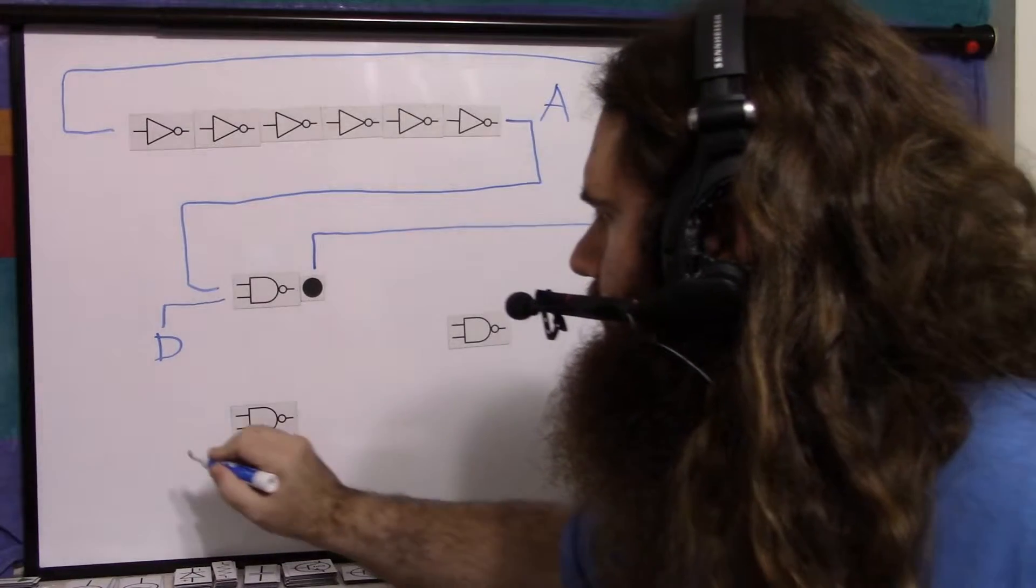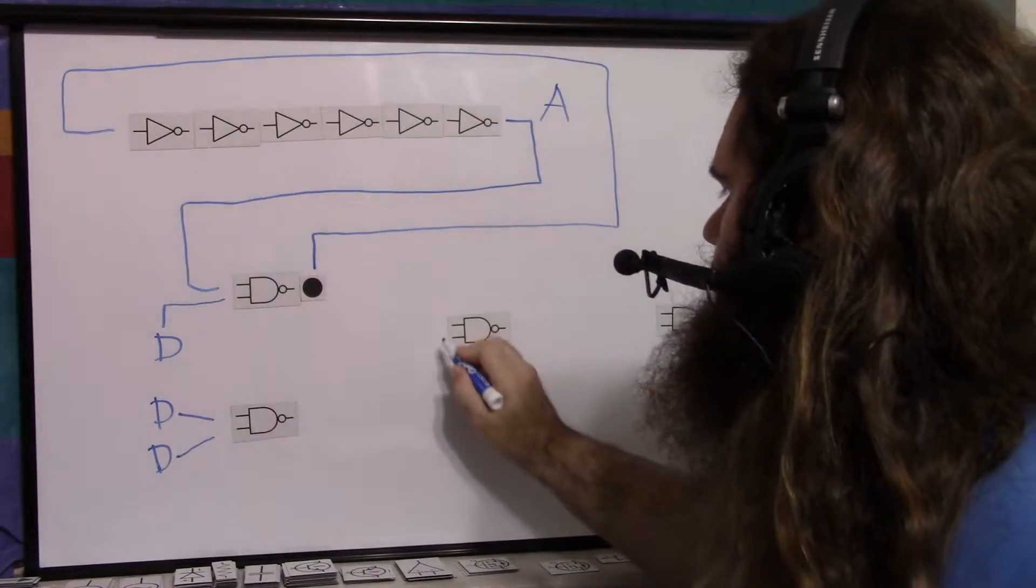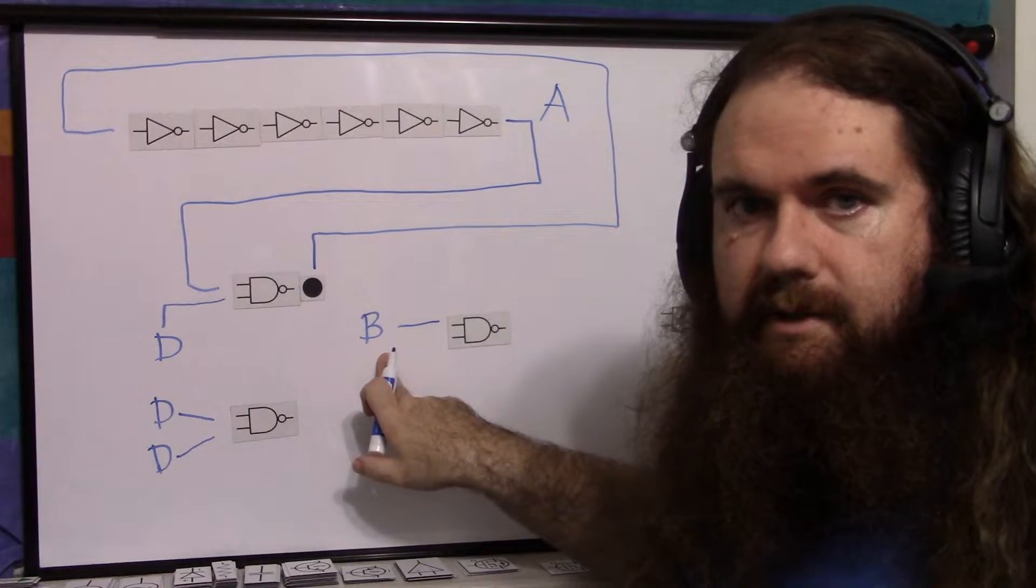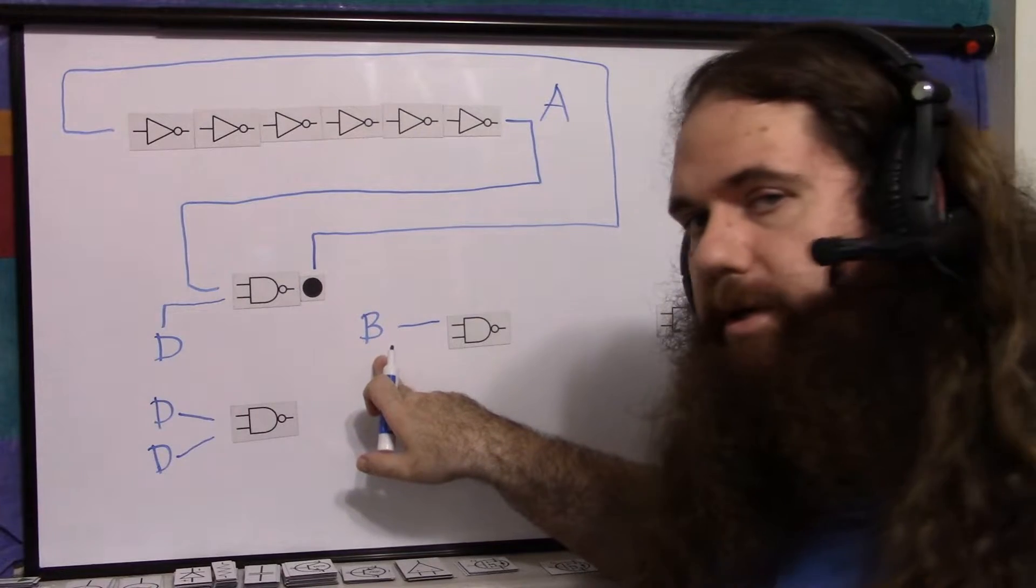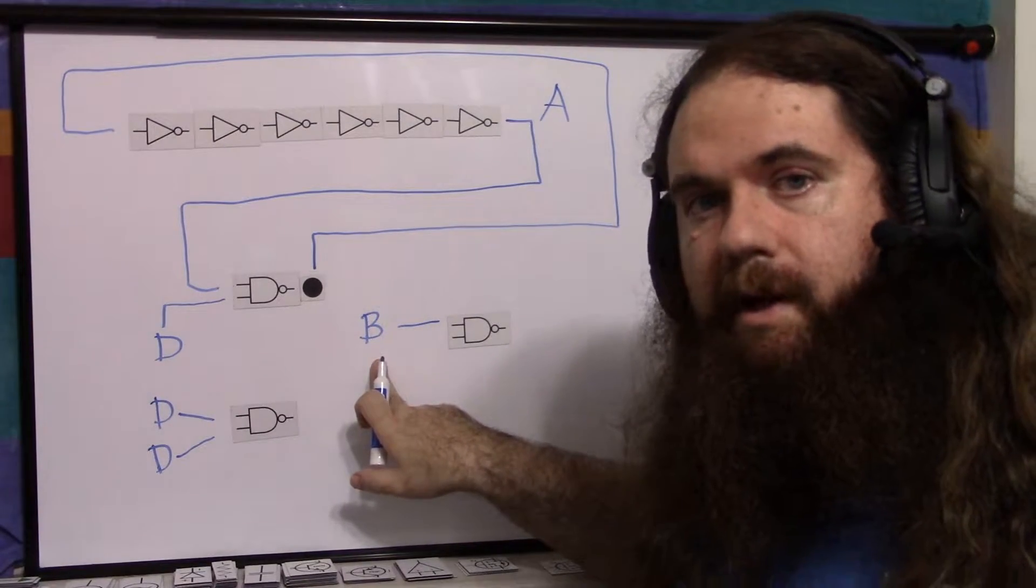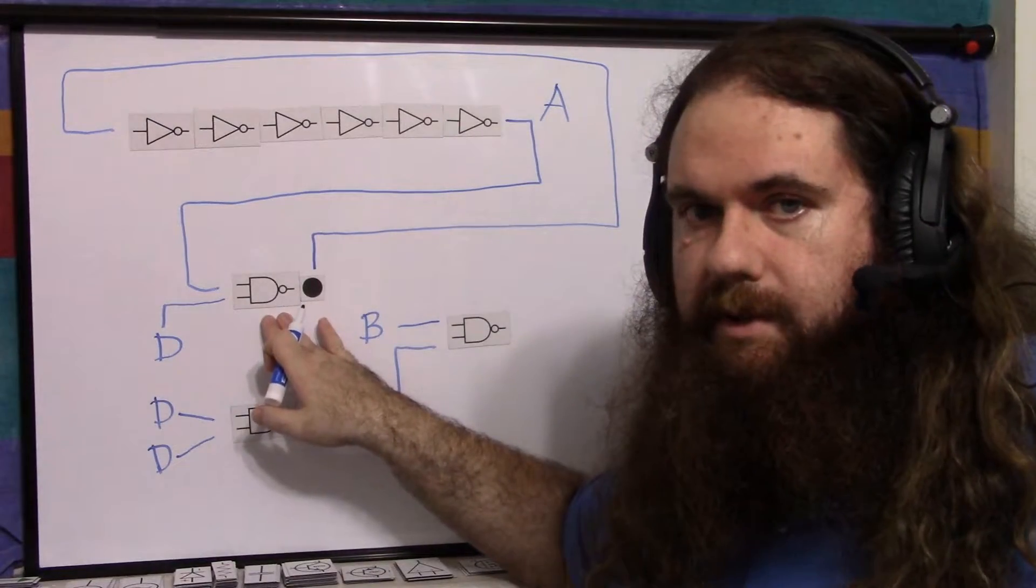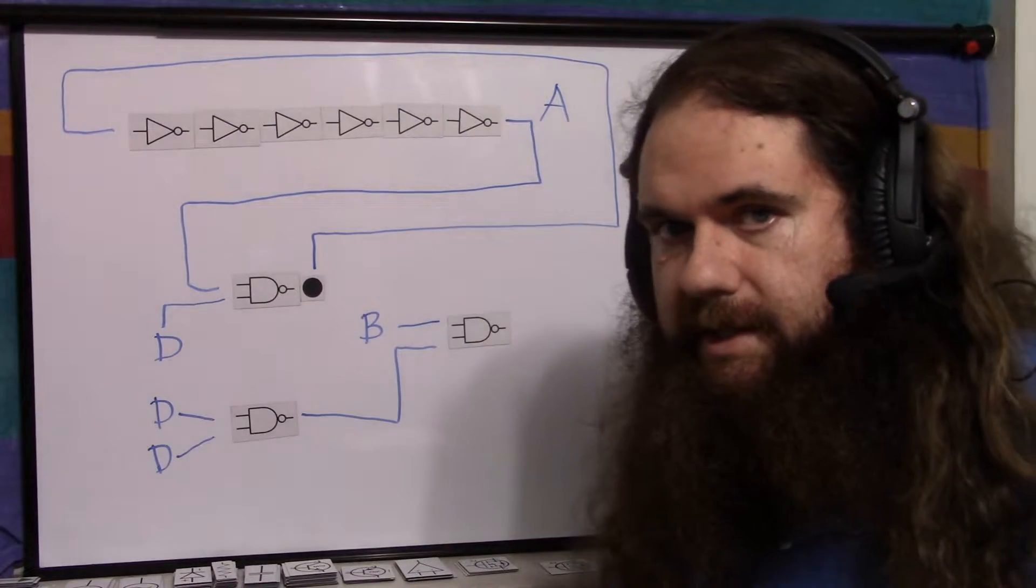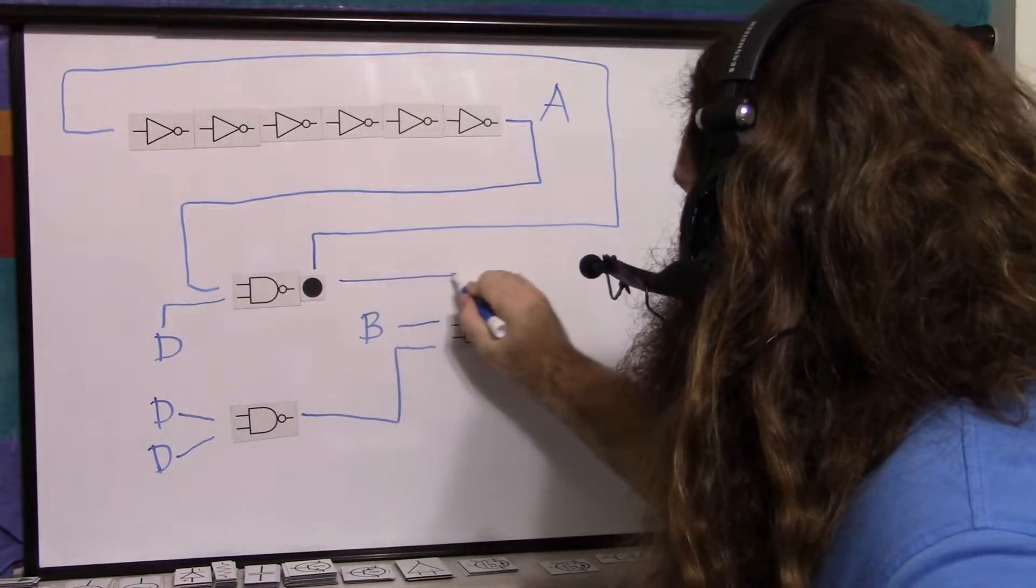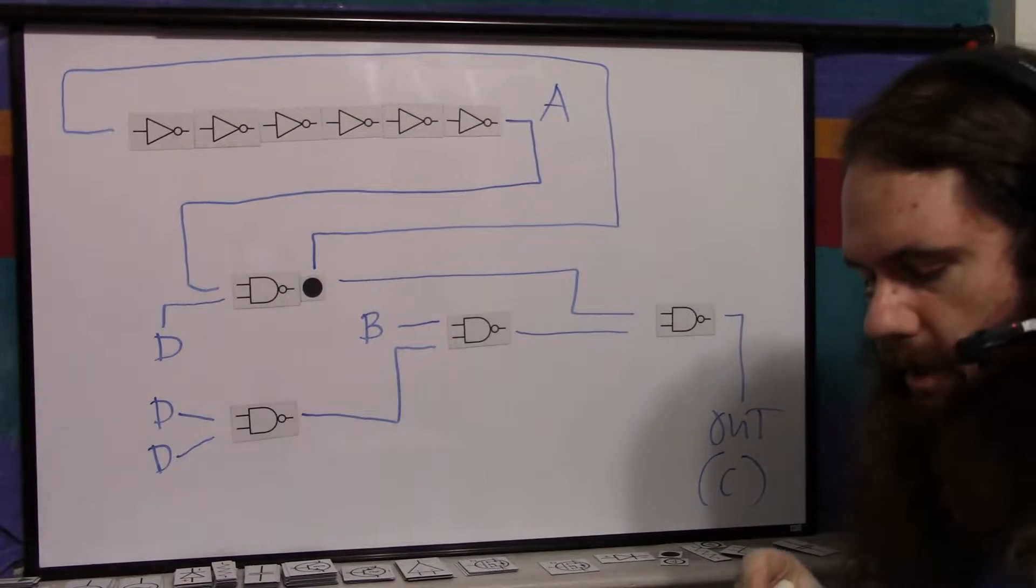So then over here we have the data signal that we invert with this NAND gate, and then we have the B signal. The B signal is whatever is supplied by the user, by the circuit, whatever. We don't care what it is, we're just passing it through after boot, and that takes D naught. So when D is high, when the boot up signal is high, we're selecting this signal. When the boot up signal is low, we're selecting this signal, and then we pass that into the final NAND gate, and the output here is the output clock.